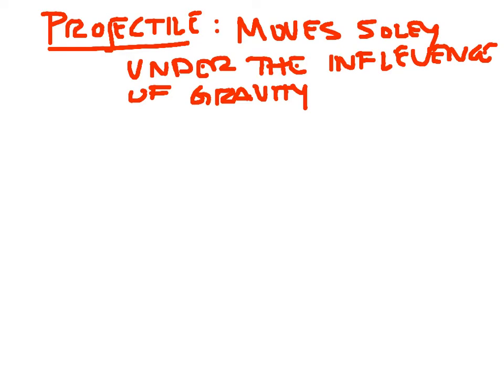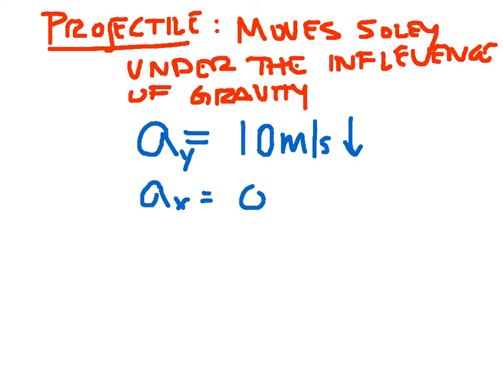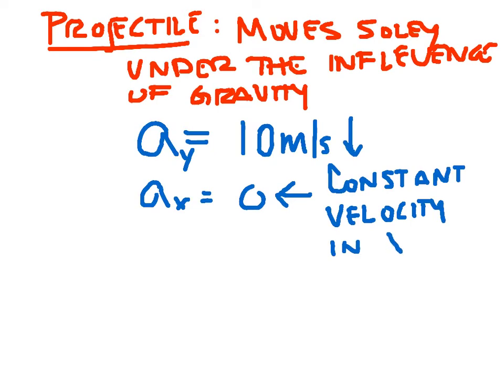So for a projectile, a definitive thing that we can say that becomes very helpful is that the acceleration is always equal to 10 meters per second squared in the downward direction. That's all in the y direction. So we can also say that the acceleration in the x direction is equal to 0. That gives me constant velocity in x. If gravity is the only thing acting on a projectile, the y velocity is going to change because of that gravity. But in the x direction, it's going to be constant.